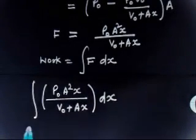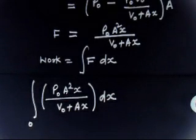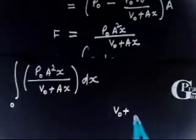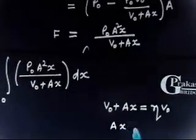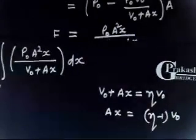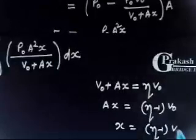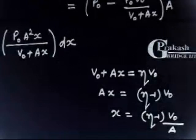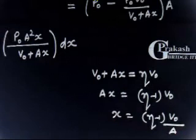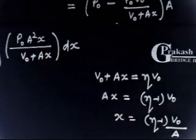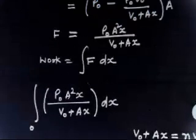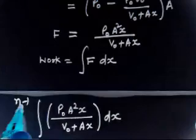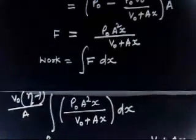The lower limit of integration is x = 0. For the upper limit: the final volume is eta times V0, so V0 + Ax = eta·V0, which gives Ax = (eta - 1)·V0, so x_0 = (eta - 1)·V0 / A. This is the final limit for x.